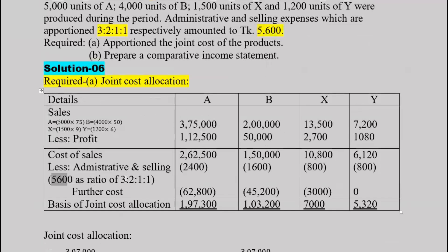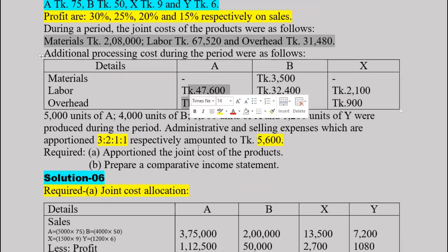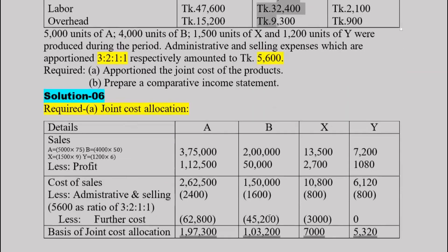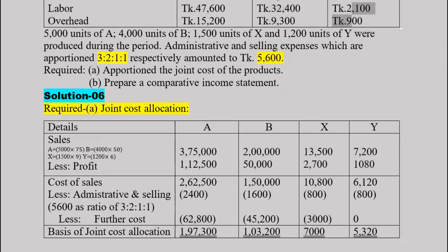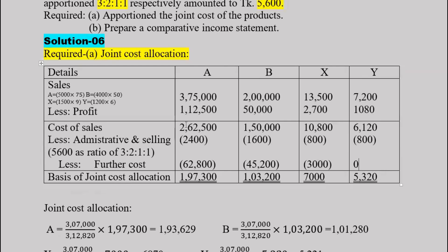Further costs: product A has further cost of forty-seven thousand six hundred, and product B has fifteen thousand two hundred, giving a total further cost of sixty-two thousand eight hundred. Product Y has zero further cost. The total cost of sales figure comes to approximately 28,888.